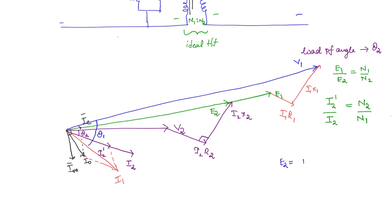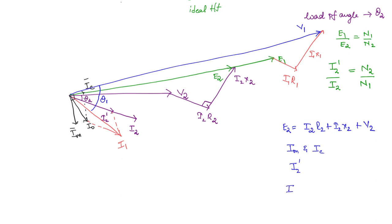The secondary side KVL is: E2 equals I2 R2 plus I2 X2 plus V2. Once we got E2, we found out E1 from the turns ratio relation. Once we got E1, we drew IM and IC — IM lagging E1 by 90 degrees and IC in phase with E1. After that we drew I2 dash using the current relation. Adding IM and IC gives I0 — this is KCL. I0 plus I2 dash equals I1. Then applying KVL on the primary side: V1 equals I1 R1 plus I1 X1 plus E1.